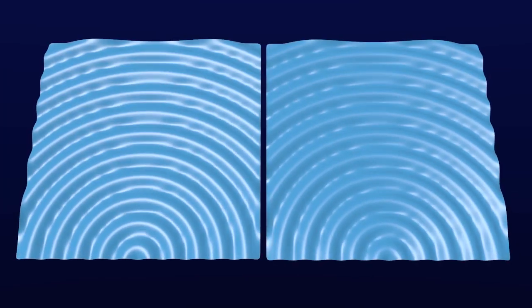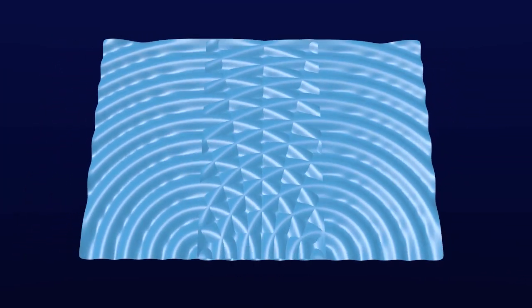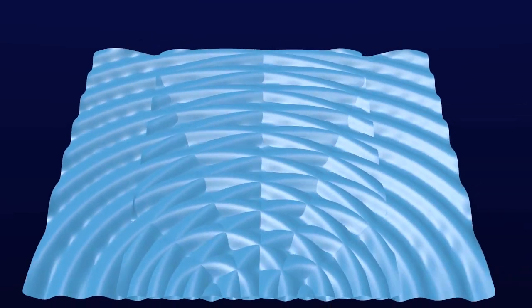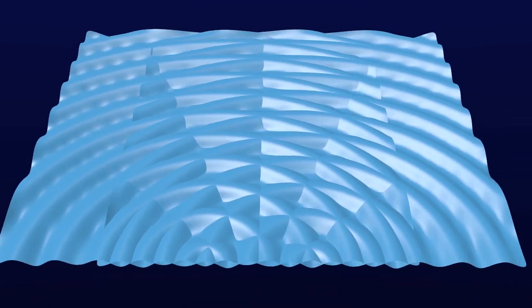If a wave passes through two gaps in a wall, two waves will come out the other side. These two waves will interfere with each other and produce an interference pattern.